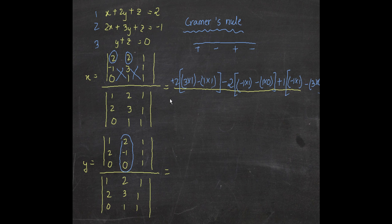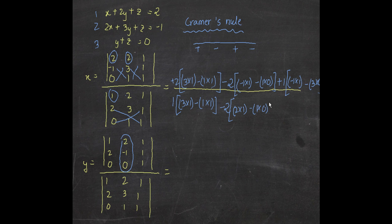Now let's do the denominator. One is taken, so: three into one minus one into one. Then minus two — and note that if it were minus two in the matrix, this sign would flip to plus two by basic math. So minus two times: two into one minus one into zero. Then plus one times: two into one minus three into zero. Remember, two into one minus three into zero — not three into zero minus two into one.